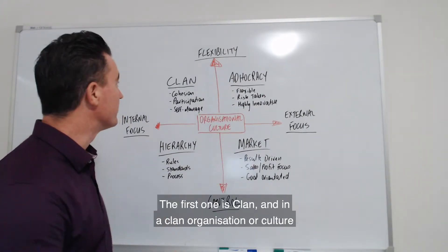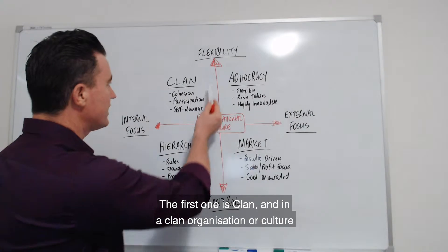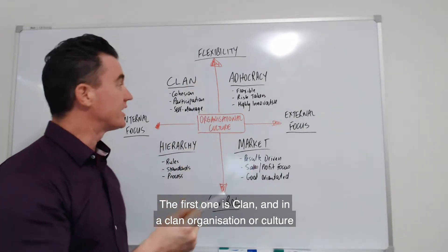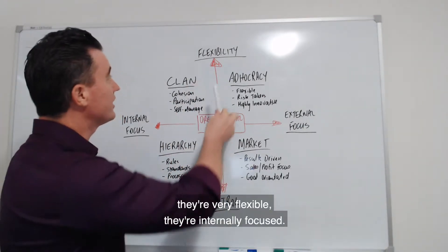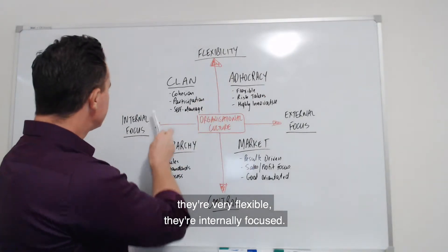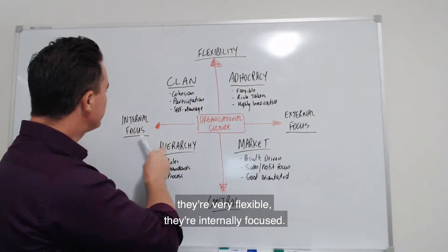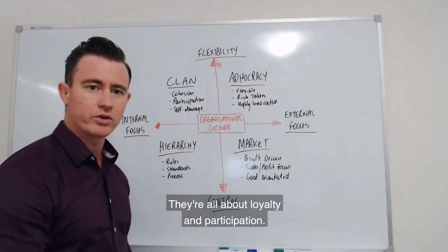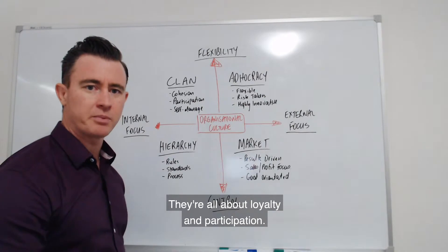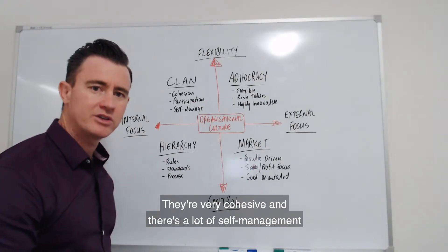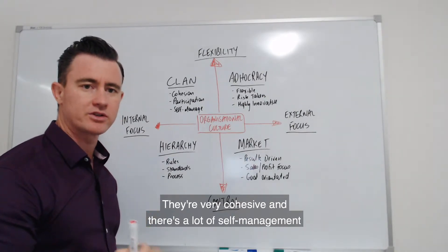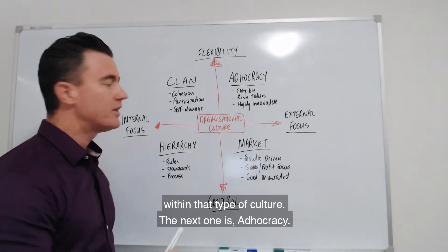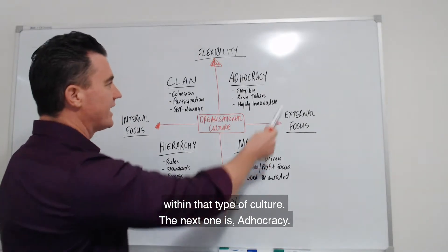G'day guys, we're continuing our look at organizational culture. Today we're posing a question: do you as a leader understand your organizational culture and values, and are you living the behaviors that they were intended? And is your team doing that? Before you can really analyze what's going on within your culture, values, and behaviors in the organization, you've got to have a good understanding of what types of cultures exist.